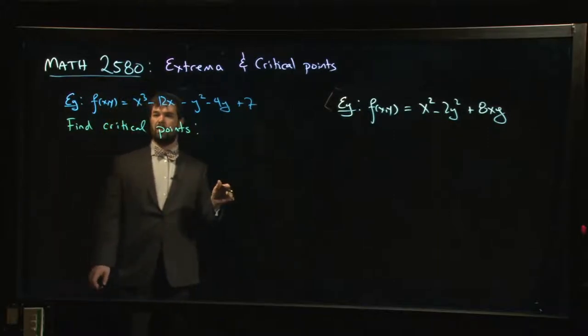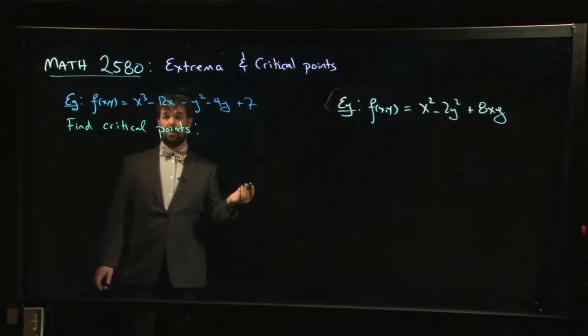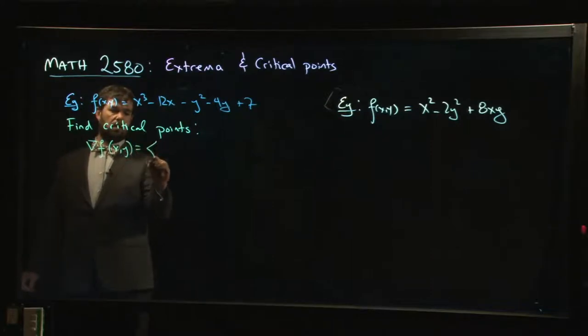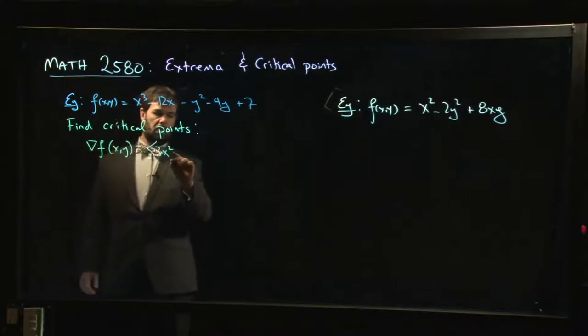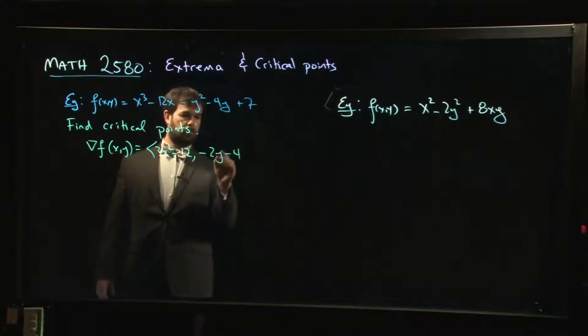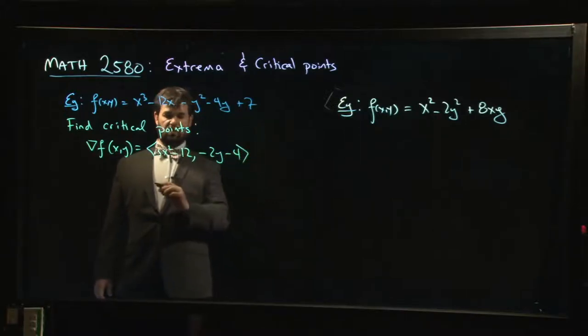Well we saw in the last video that critical points by definition are the places where the gradient is 0. So we better start by finding the gradient. So the gradient of f is 3x² - 12 for the x derivative, and then -2y - 4 for the y derivative. Derivative of 7 of course is 0 in both cases.